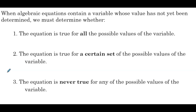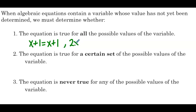In the first case, the equation is true for all possible values of the variable — you can pick any x value, put it in, and the equation remains true. An example of this would be x plus 1 equals x plus 1. No matter what x value you choose, this equation is always going to be true. Another example would be 2x equals 2x — regardless of the x value you pick, 2 times that value is still equal to 2 times that value.